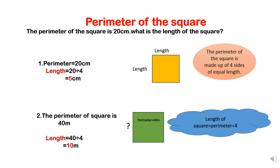Now we will find out the length of a square. Here we have an example: the perimeter of the square is 20 centimeters, and we have to find the length of the square. Keep in mind that the perimeter of the square is made up of four sides of equal length. To calculate the length, we have the formula: length of the square equals perimeter divided by 4. So, the length of the square is 5 centimeters.